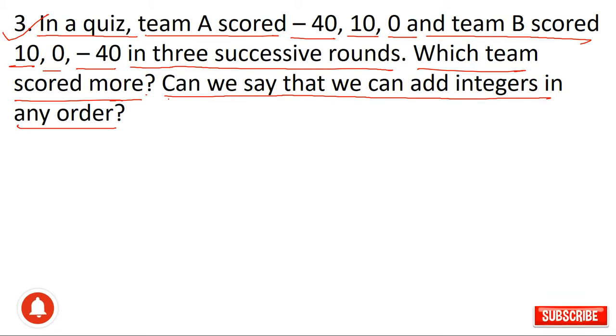There are two teams. Team A scored minus 40, 10 and 0 in 3 rounds. And team B scored 10, 0 and minus 40 in 3 rounds. Which team scored more?